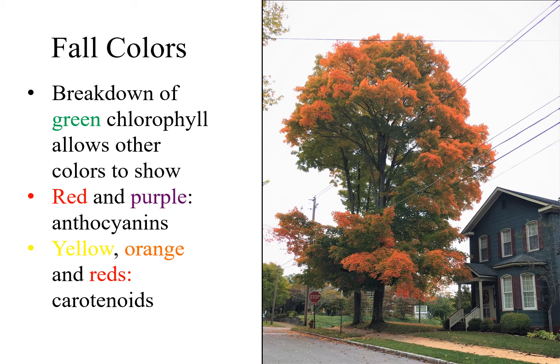Fall colors result from the breakdown of green chlorophyll in the leaves and the expression of other pigments that were always present in the leaf. You can just see them when the green chlorophyll starts to break down. Anthocyanins produce red and purple colors, and carotenoids produce the yellow, orange, and red colors.